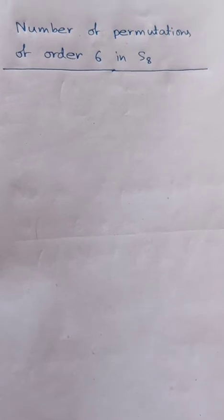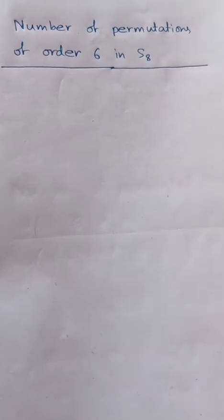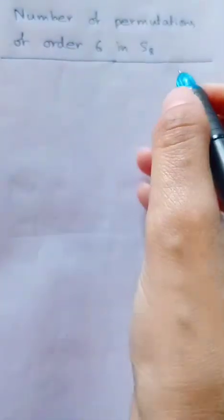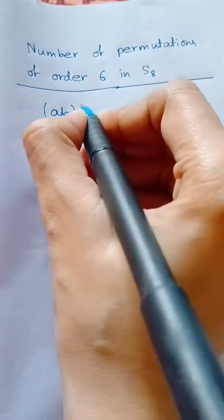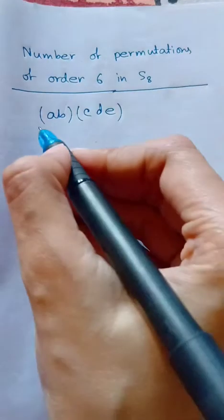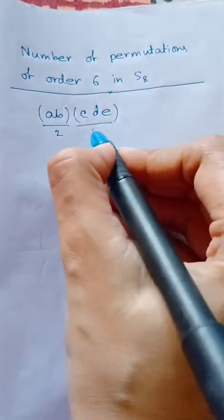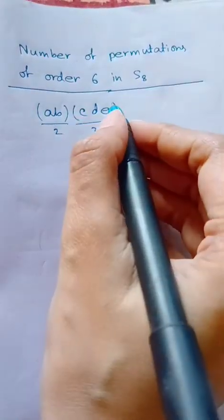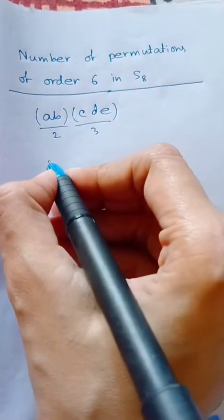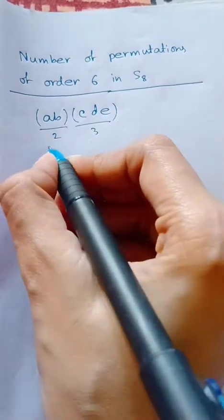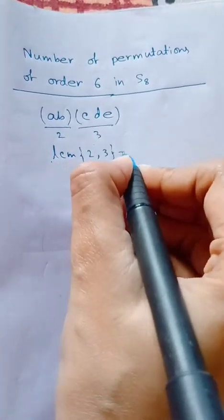If you want to count the number of permutations of order 6 in S₈, recall that there are two types of permutations which have order 6 in S₈. The first type is (ab)(cde) — a 2-cycle and a 3-cycle. The order of this permutation is LCM of 2 and 3, which is 6.